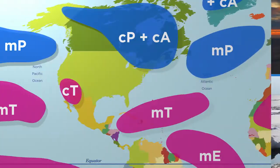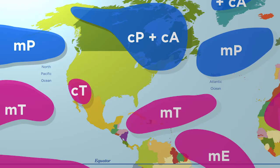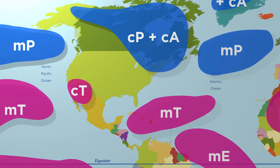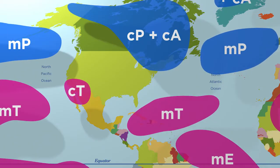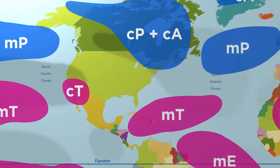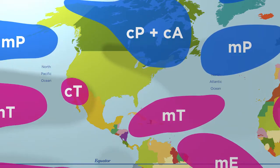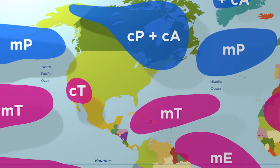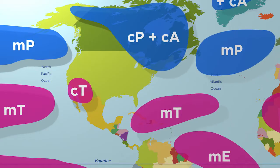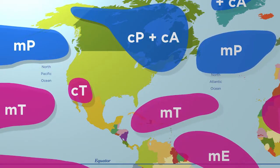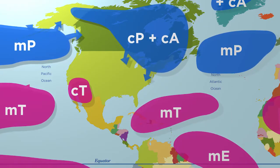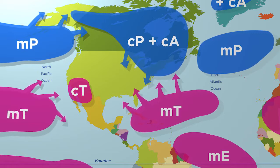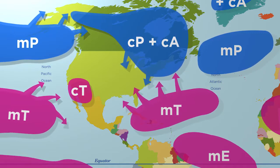Air masses circulate and move in the atmosphere. The air masses move vertically as warm air rises and grows less dense, and they continue to move vertically when the air cools and sinks after growing denser. Conversely, air masses move horizontally when air from high-pressure areas moves to low-pressure areas and creates wind.